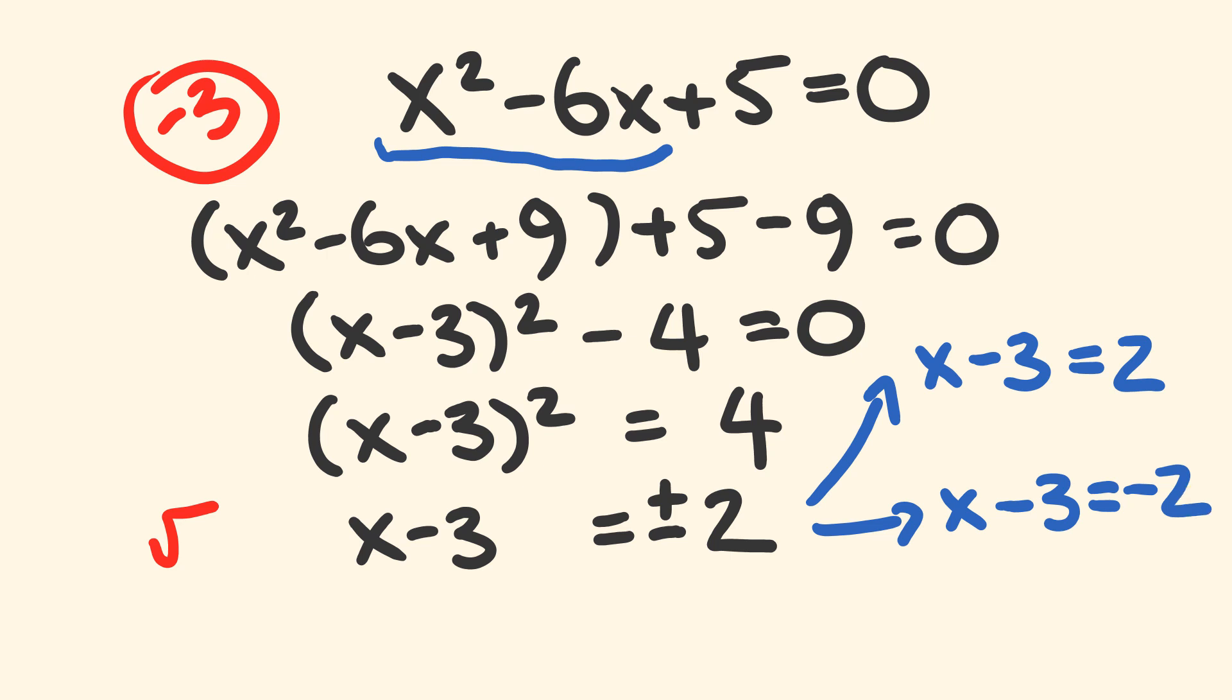We can now solve for our x values. x here would equal 5, since 5 - 3 = 2. x on our bottom equation would equal 1, since 1 - 3 = -2. So these are the solutions for x for our quadratic equation. You could substitute these in to verify, but they are correct.